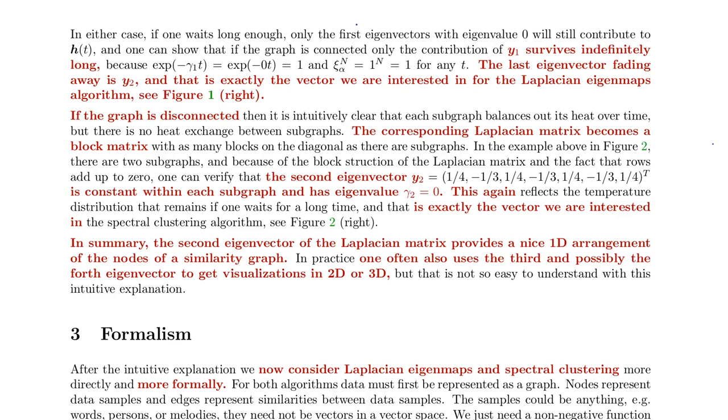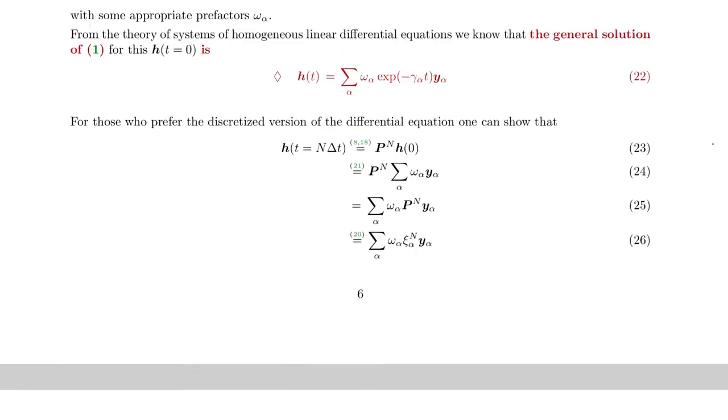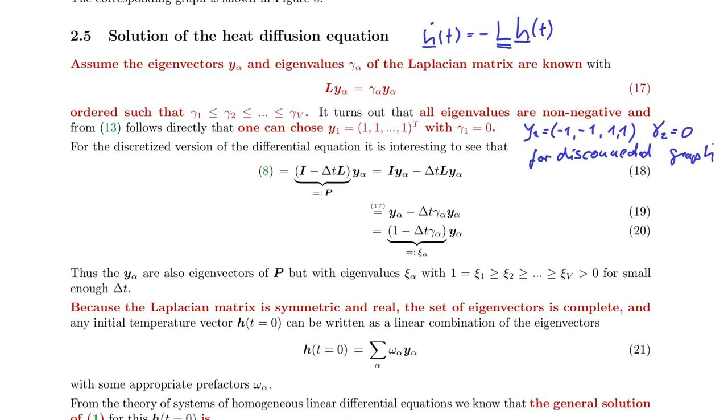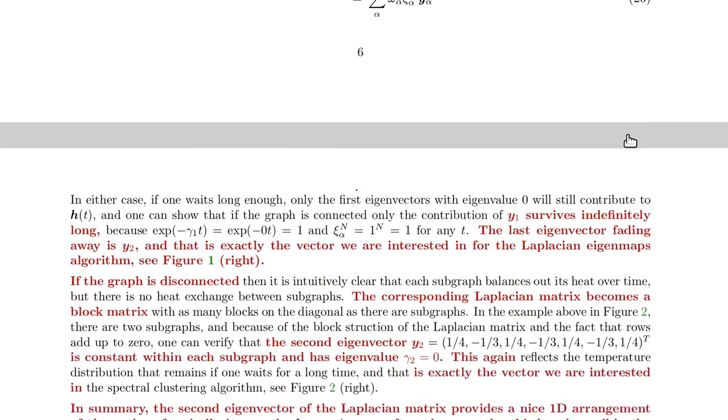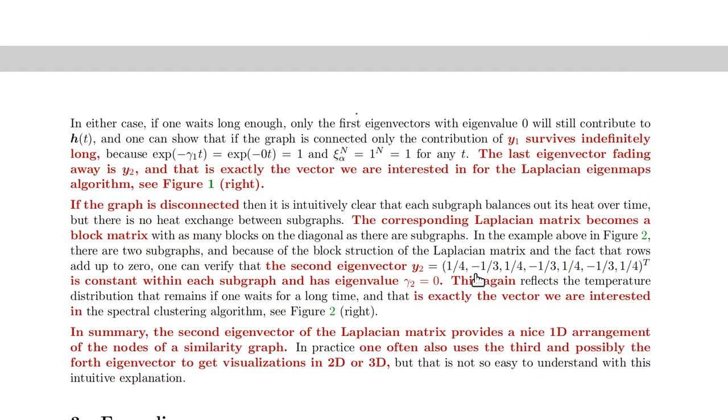And if the graph is disconnected, you have solutions like I've shown above. Like this one. And this is now useful for clustering. So you would group these two into one cluster and these two in one cluster. And that is shown here. This is for the example that I've shown above.